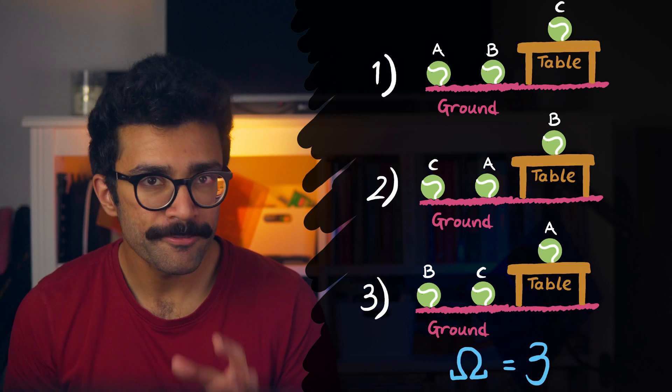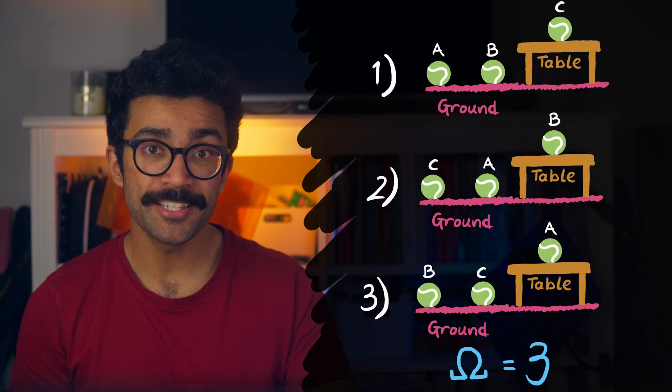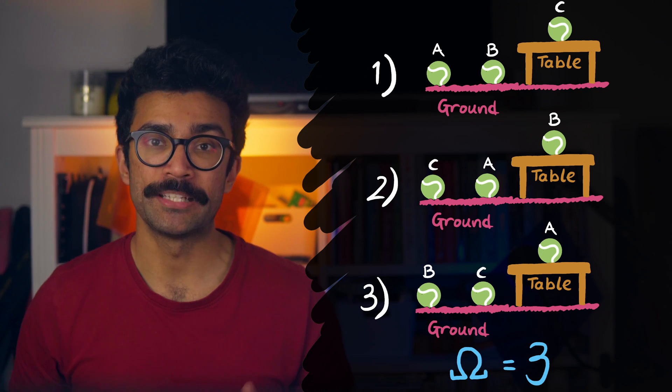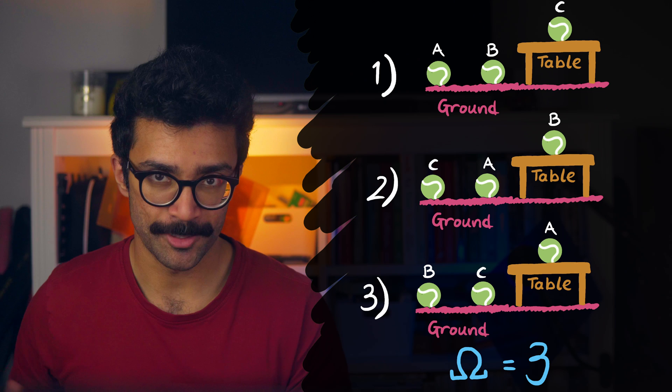Thanks once again to Brilliant, now let's get back to the video. Okay, so this contrived system that I came up earlier, with tennis balls placed either on the ground or on the table, is a much simplified version of systems we can study when we learn statistical mechanics.